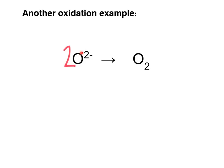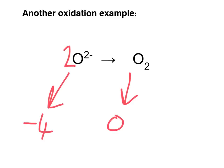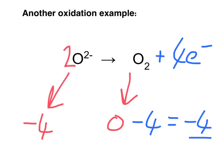Now let's look at the charge. We have a 2− charge and 2 of those ions, so that's 2 × −2 = −4 on the left-hand side. The right-hand side has no charge, giving 0. The side with the lowest (most negative) charge is the left at −4. I need to make the right-hand side equal −4, so I add 4 electrons: 0 − 4 = −4. Both sides are now equal. This is oxidation because the electrons are on the right-hand side, meaning they are being lost.